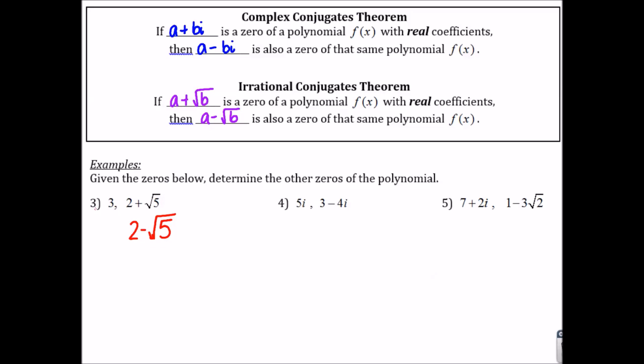So, if you are given some of the zeros of a polynomial, you can determine some of the other zeros. If we know that 3 is a zero and 2 plus square root of 5 is a zero, we also know that 2 minus square root of 5 is a zero. We do not know that negative 3 is a zero because the theorems only refer to complex numbers and irrational numbers — 3 is an integer, so that does not apply. For the next problem, we know that 5i is a zero so negative 5i is a zero, and since 3 minus 4i is a zero, 3 plus 4i is also a zero. And in problem number 5, 7 minus 2i is a zero, and 1 plus 3 square root of 2 is a zero.